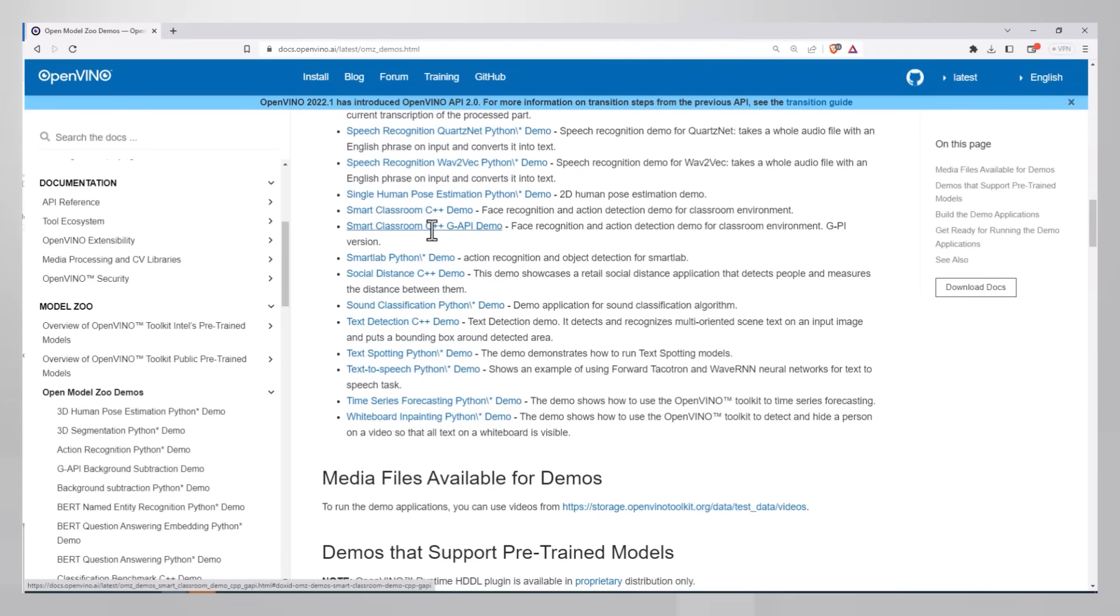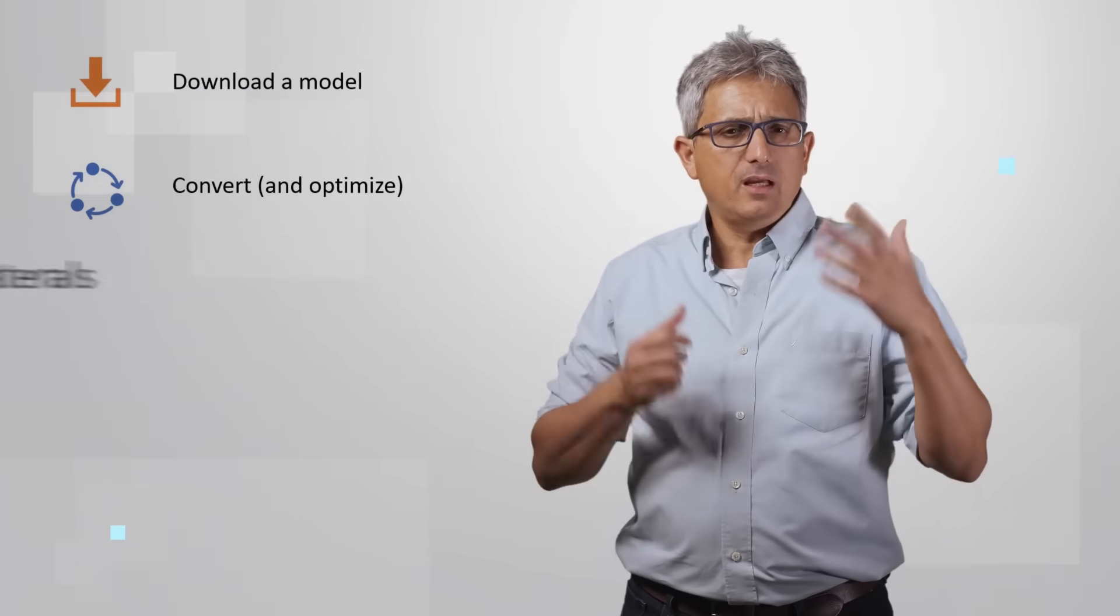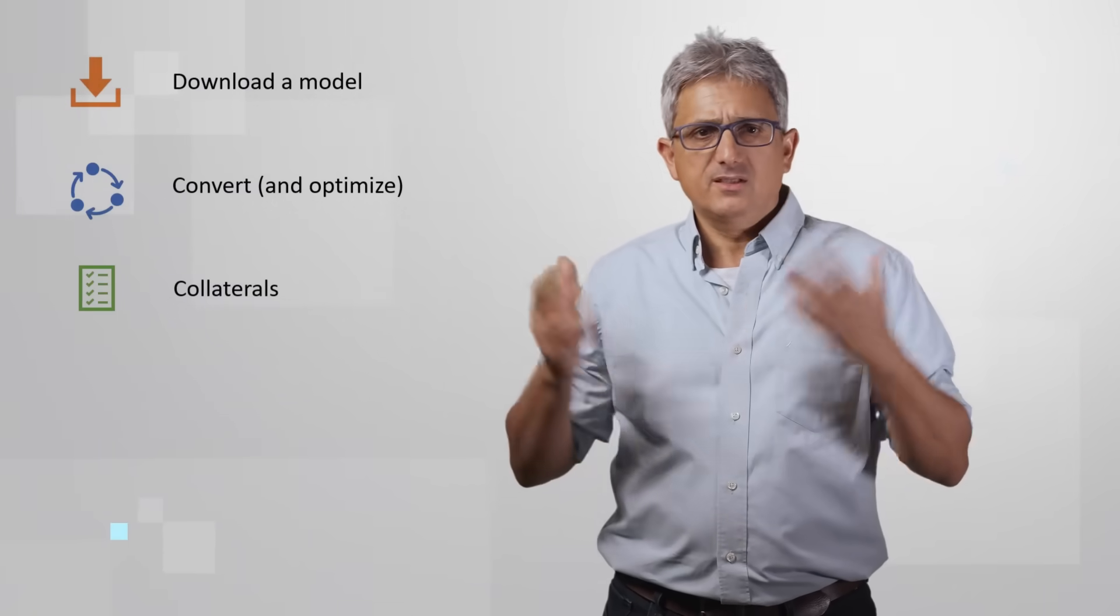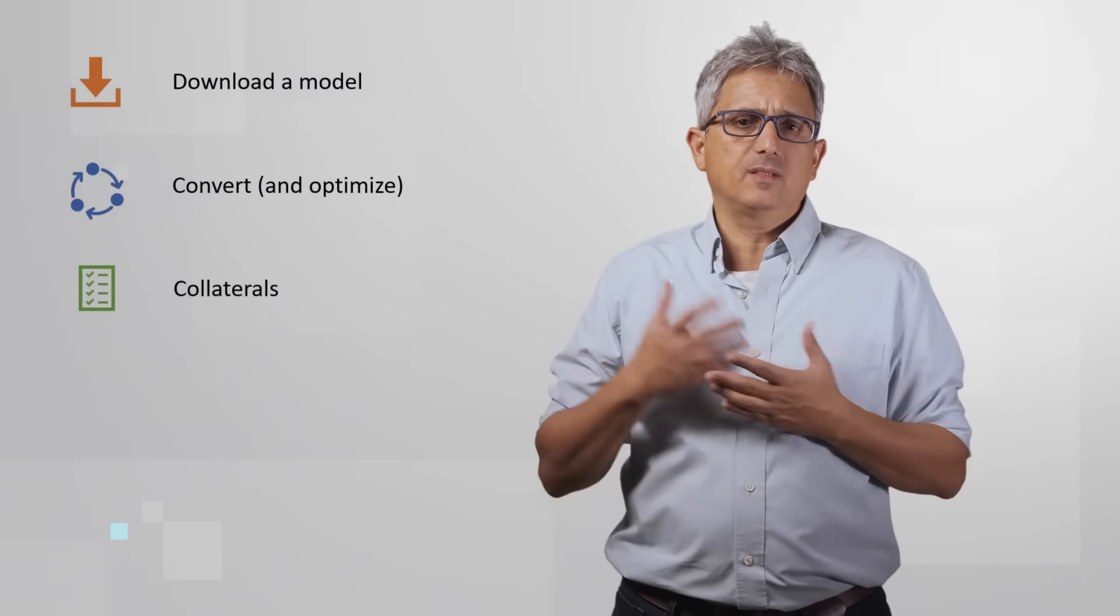Basically, you need to clone the repository, download the model, convert it if needed, get the other collaterals. Sometimes it's an input video, sometimes text or other, and run the demo.